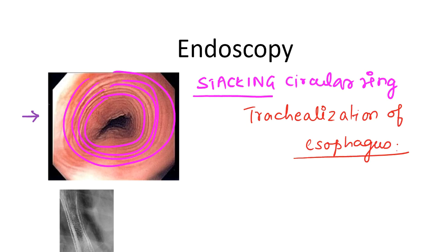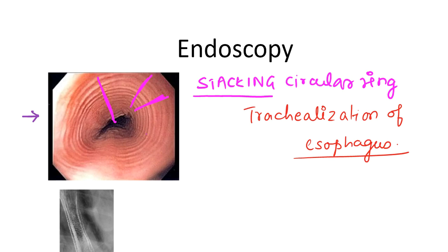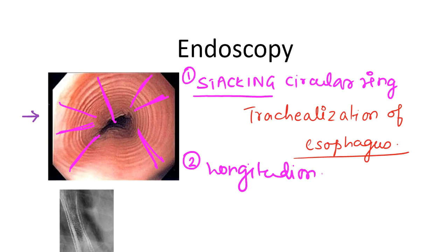One more finding you can notice in this endoscopy is longitudinal furrows — something like ridges. This is called furrowing. So we have two findings: the stacking circular ring appearance and longitudinal furrows in the esophagus.